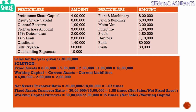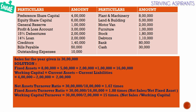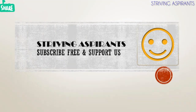So that's all about the activity or turnover ratios examples. I believe you guys got an idea regarding all these examples. We have to be very much aware of all these formulas, memorize them, and try more examples so you will be in a better position to handle activity or turnover ratio problems. We will see you in another video — until then, bye from Striving Aspirants. Take care, thank you for watching. Please subscribe to our channel and support us.